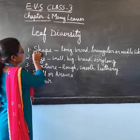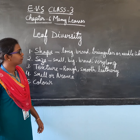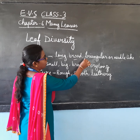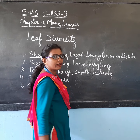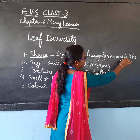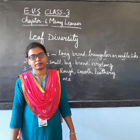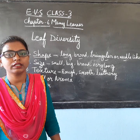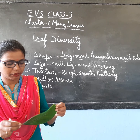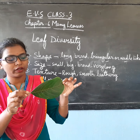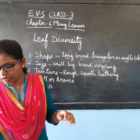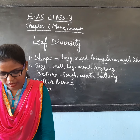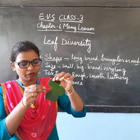First, we will see the shape of a leaf. Some of the leaves are long, some are broad, some are triangular in shape, and some of them are native-like leaves. I have brought here some leaves. You can see here some leaves are oval in shape, then the long leaves, and then different shapes of leaves.